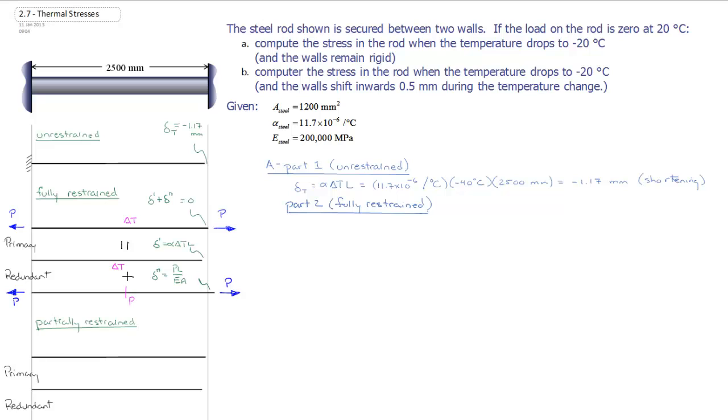And now I'm basically going to apply my compatibility equation. So we know that delta prime plus delta double prime has to be equal to zero. I can fill those in from my two equations. So we have alpha delta T L plus PL over EA equals zero.